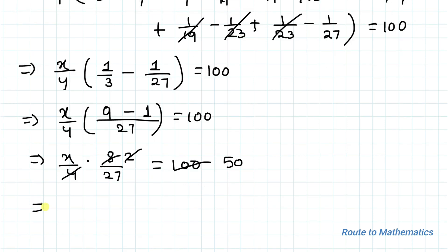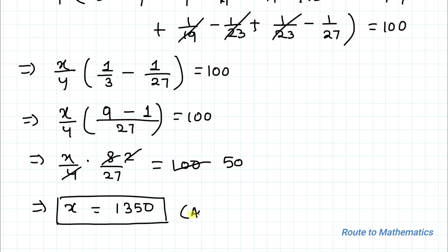By cross multiplication, we get x = 27 multiplied with 50, which gives x = 1350 as our answer. I hope you have understood the solution. Thanks for watching — please subscribe to my channel and click the bell icon for more such interesting videos.